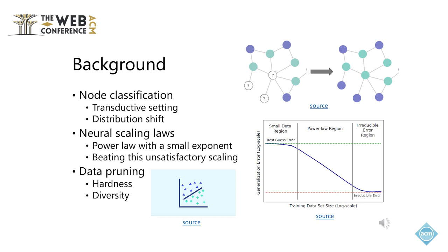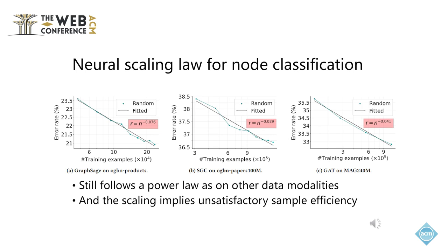When the training examples are redundant, such as the training nodes in a web-scale graph, it is natural to consider pruning some of them while keeping the same or at least comparable performance for the learned model. Research in this line mainly considers two kinds of principles: one is to prioritize hard examples, where hardness can be measured in many ways including entropy and robustness-based methods; another is to maximize the diversity of the selected training examples, such as picking typical examples from each class of the data. In our paper, we first try to answer the question of whether GNNs also follow a power law scaling in typical node classification tasks.